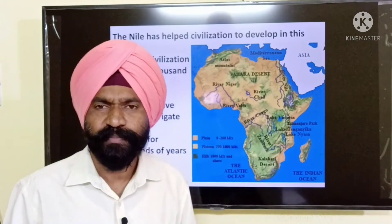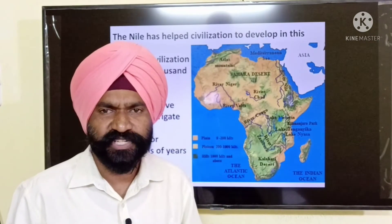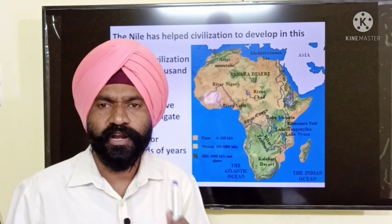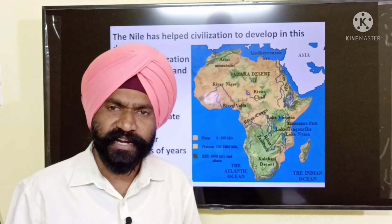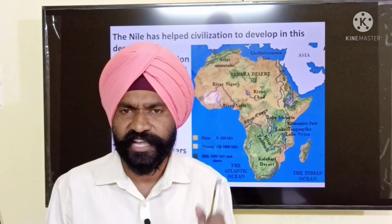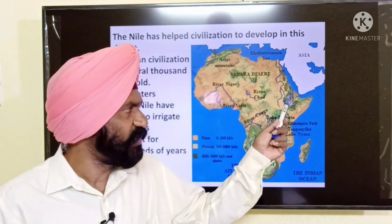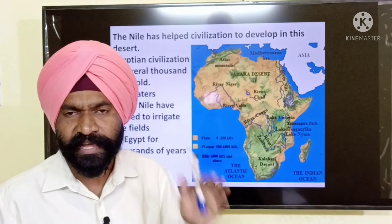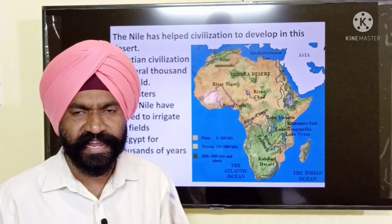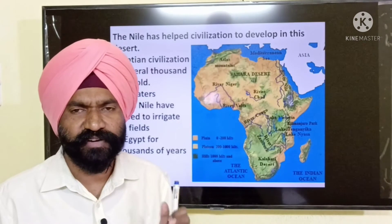The Nile river helped a great civilization in early times to develop — the Egyptian civilization. As this civilization flourished on the banks of the River Nile, in early days whenever there were vast civilizations, they used to develop on the banks of rivers. The Egyptian civilization flourished on the banks of the River Nile, which provided enough water for the people for irrigating their fields and providing water to their animals and themselves.